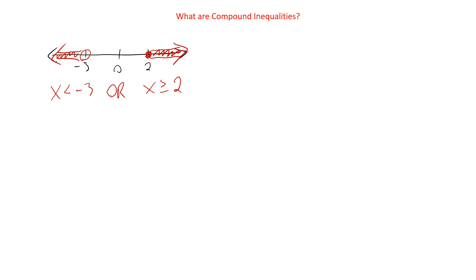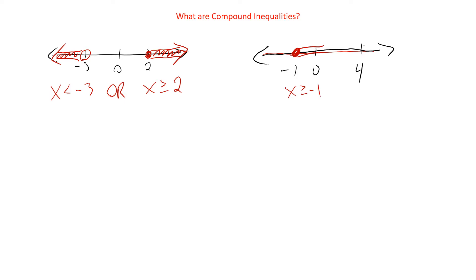And so that's a basic idea of a compound inequality. Now we could also have one — let's change the color here. Let's say we're looking at negative one, zero, and four. We could have a close dot on that one, and it's going this way, which would be x is going to be greater than or equal to negative one, and where it's also less than four. So the word we'd put in here would be AND.